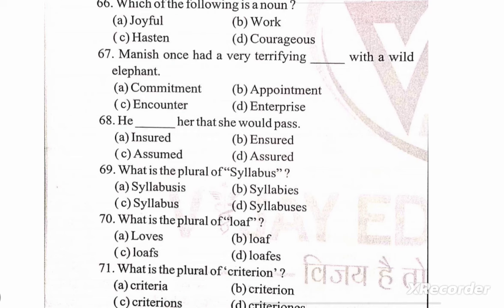Question 66: which of the following is a noun? Options: A) joyful, B) work, C) has seen, D) courageous. Correct option is B — work. Next: Manish once had a very terrifying blank space with a wild elephant. Options: A) commitment, B) appointment, C) encounter, D) enterprise. Correct option is C — encounter.